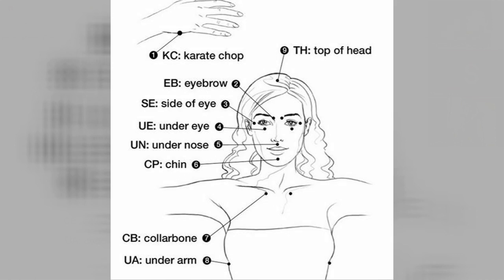We can tap our knees also — if you are hurting, just tap your knees or ankles or wherever. But mostly the points in tapping are on our face and till our elbow. There are nine main tapping points, and I will gently tell you which nine tapping points they are.